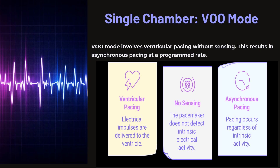VOO mode — single chamber. The V is the chamber paced (ventricle), the first O means no chamber sensing, and the second O means no response. This results in asynchronous ventricular pacing at a programmed rate. Electrical impulses are delivered to the ventricle with no sensing of intrinsic electrical activity, so the pacemaker fires regardless of intrinsic activity. This can result in R-on-T phenomenon, potentially triggering V-tach, and pacemaker syndrome may occur.